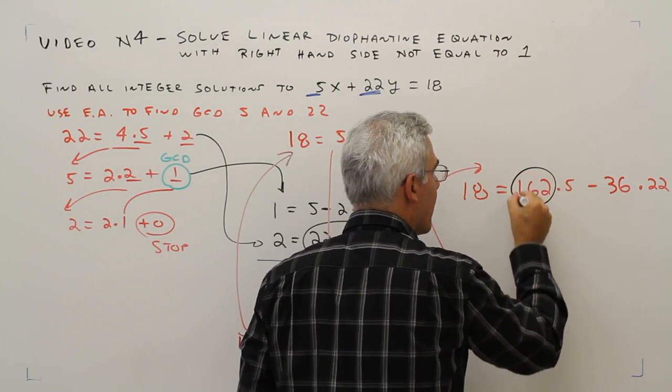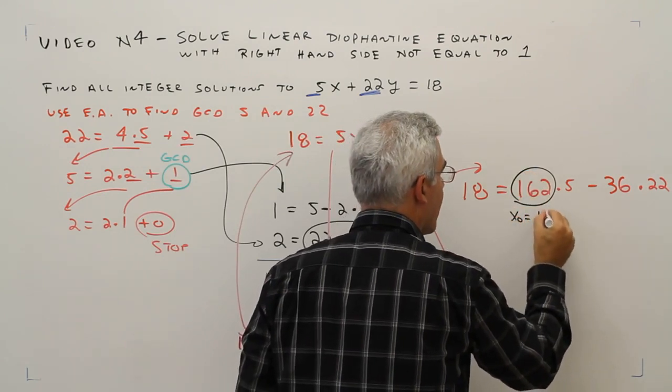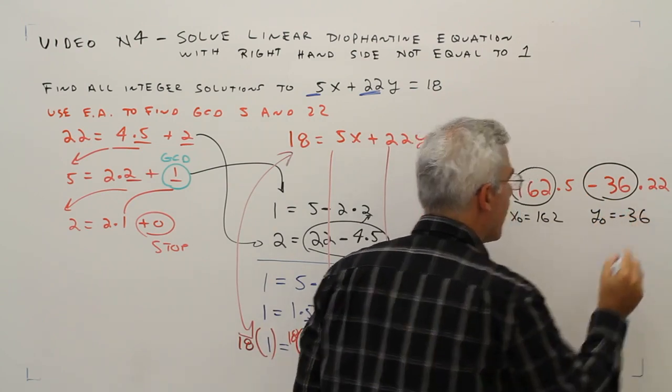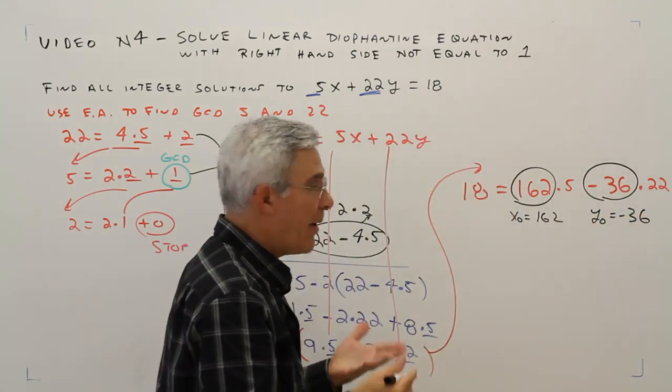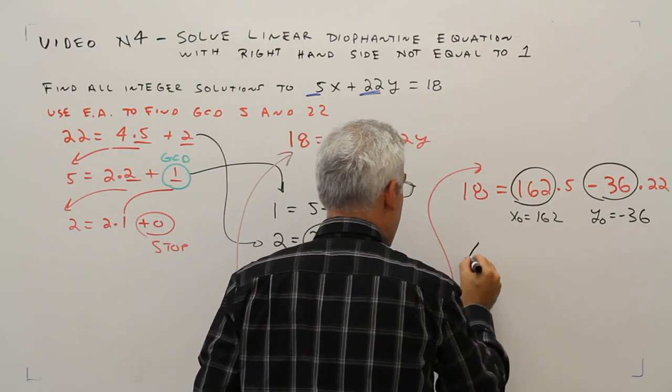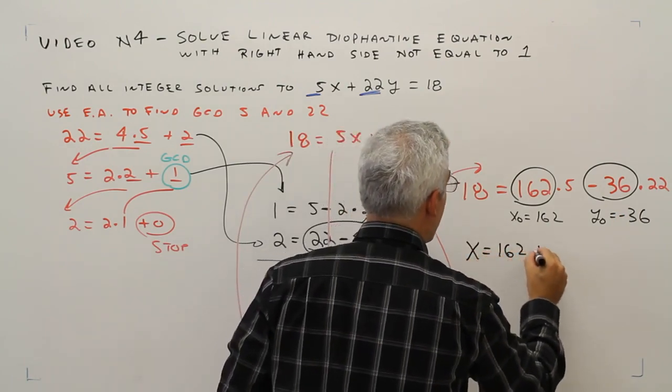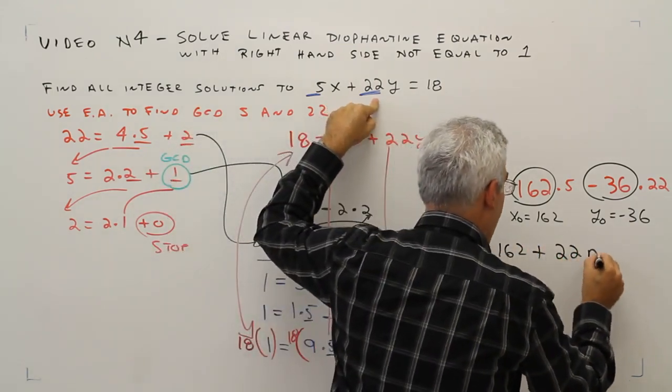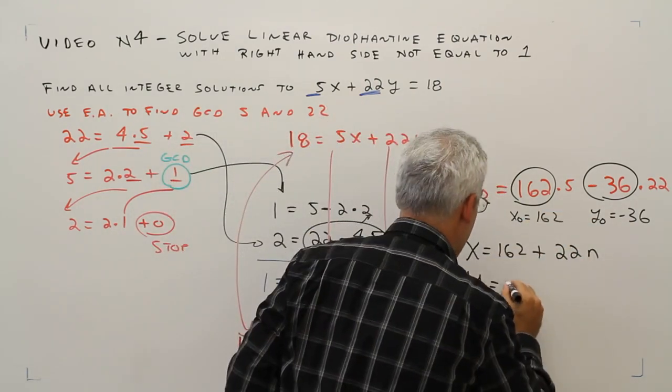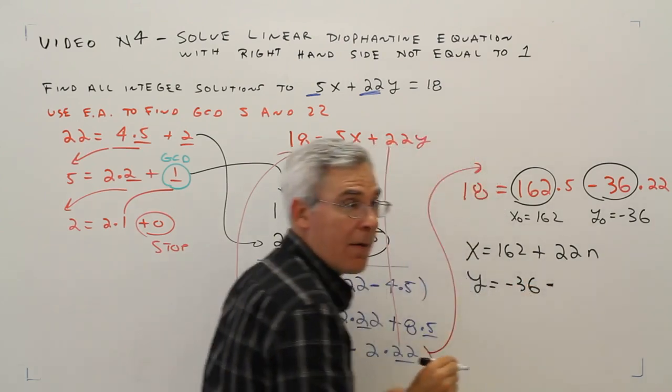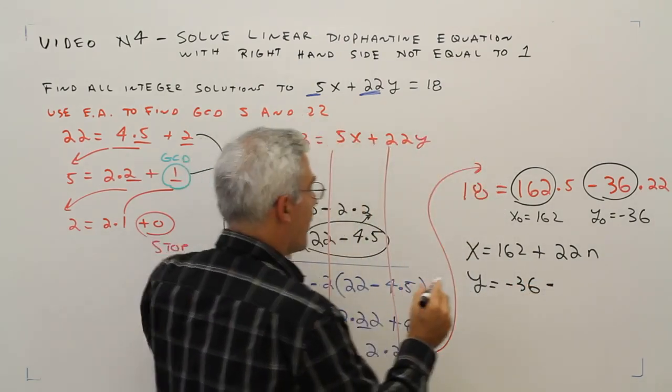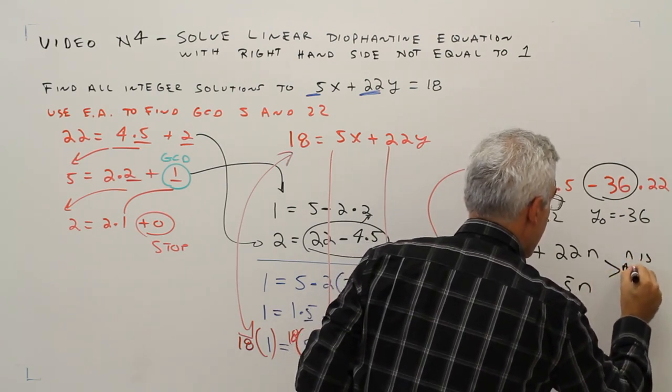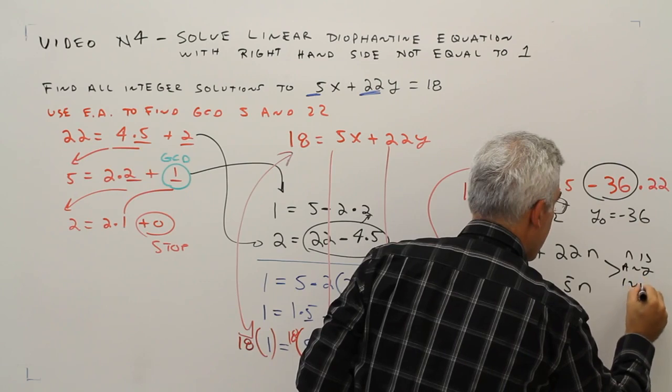So this is my x₀, this is my y₀. And my general solution would be x equals 162 plus the other coefficient, 22n. Y equals negative 36 minus the other coefficient, 5n, where n is any integer.